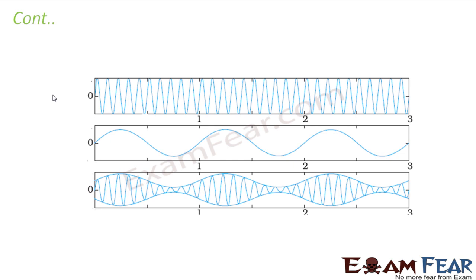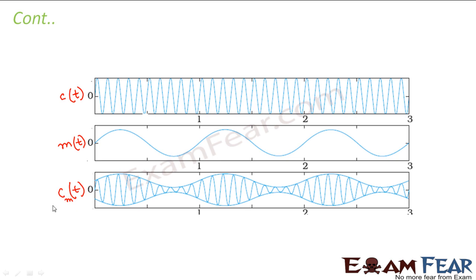Looking at the broader picture: the high frequency wave is the carrier wave, denoted as C(t). The low frequency message signal wave is denoted as m(t), since everything is a time-varying function. The amplitude modulated wave is denoted as Cm(t) — it is still a carrier wave whose amplitude has varied as per the message signal.